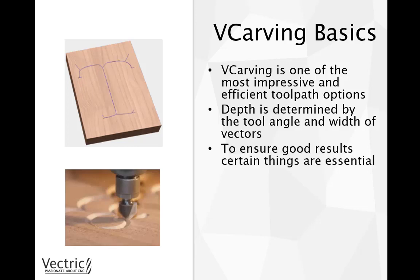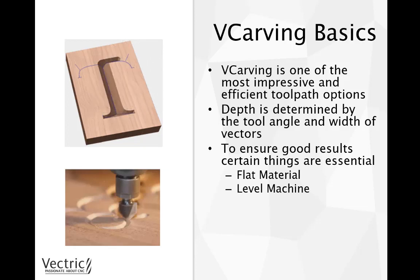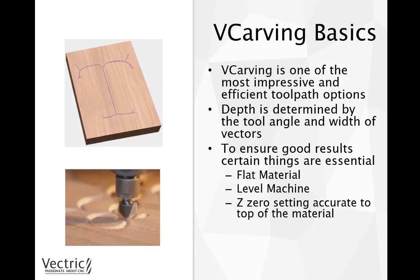Some points that can affect the outcome of our v-carving: we need to ensure that we have flat material, and we also need to make sure that our machine is level, as we want the tool to go into the material at an equal depth per vector width in all places we are cutting, so that we are not left with a piece that is unevenly cut. We also need to make sure that the tool's Z0 is set accurately to the top of the block, which eradicates the need to accurately measure the material thickness and ensures the tool creates sharp points as required.